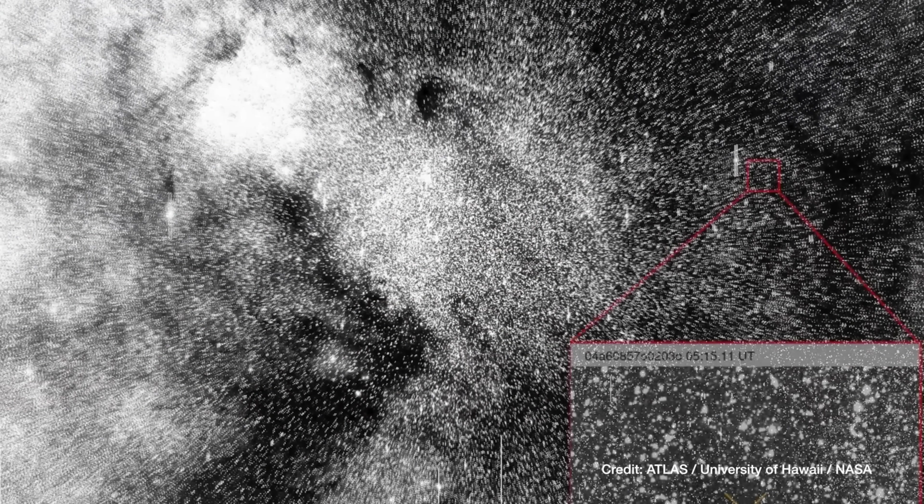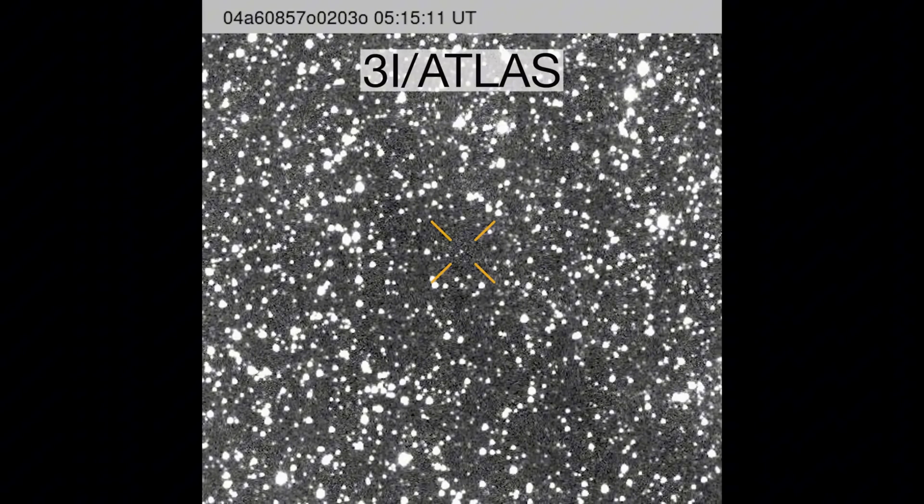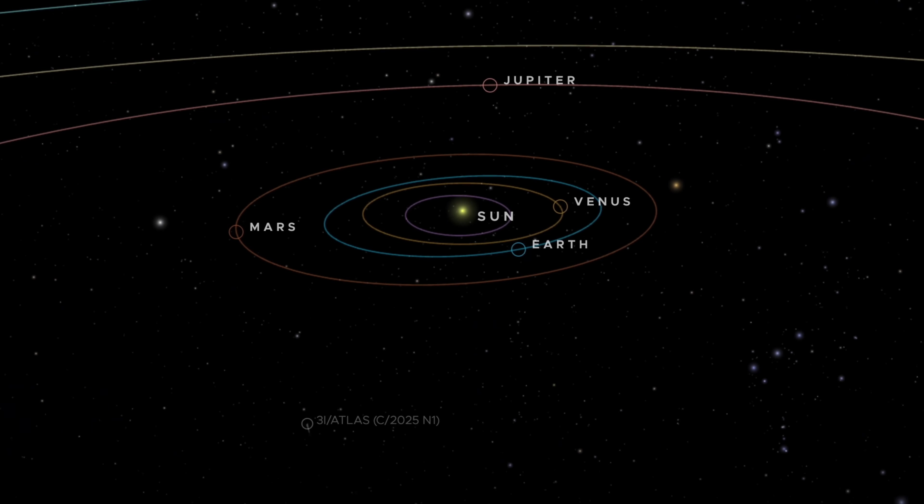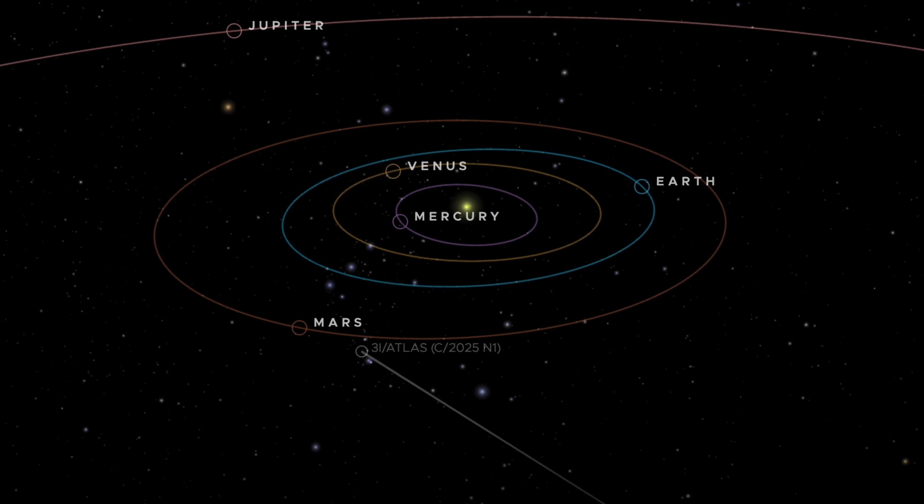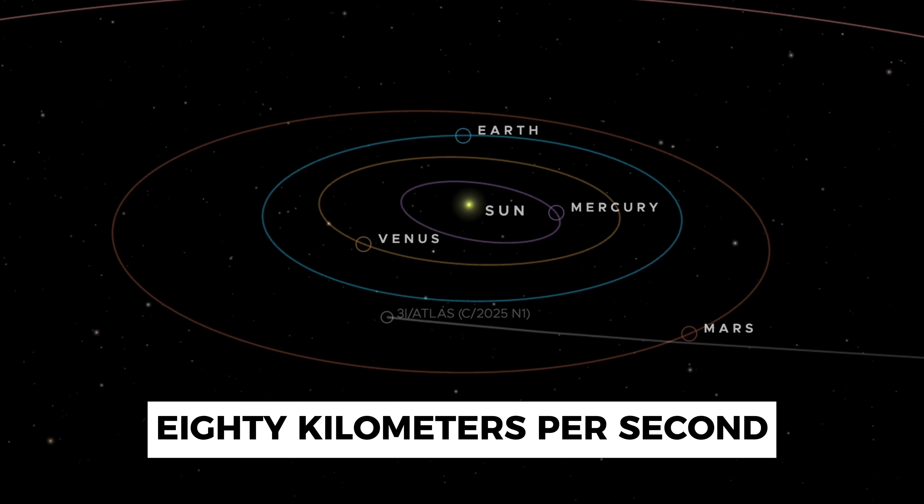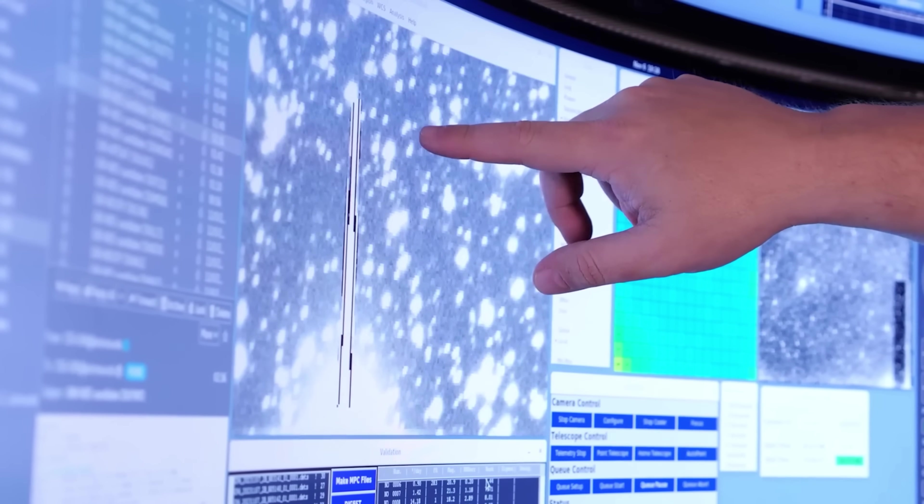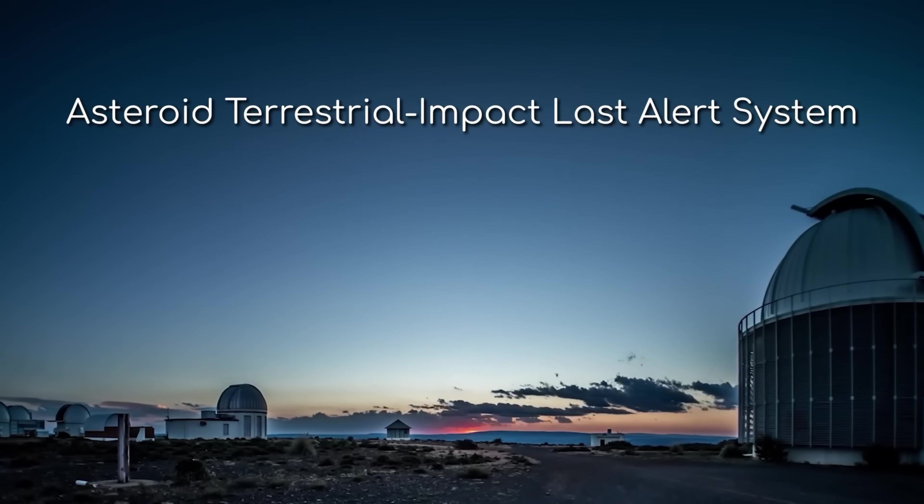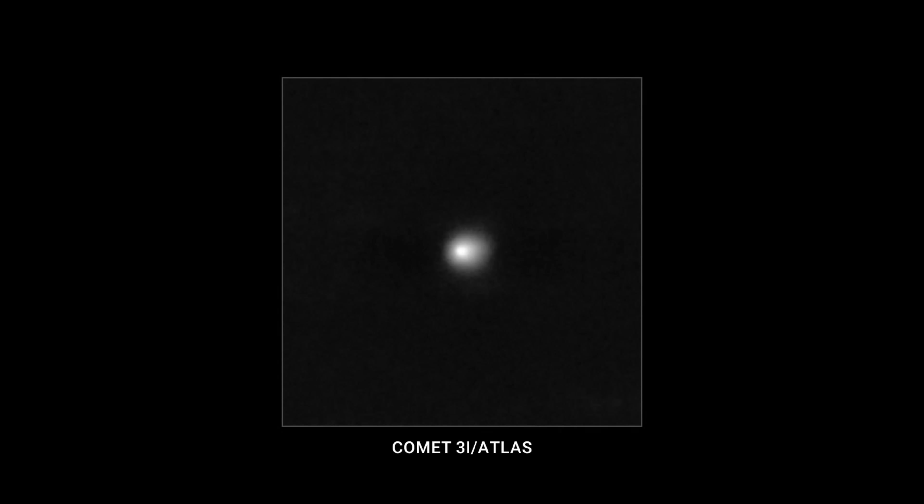To understand the magnitude of this observation, one must first appreciate the unique nature of the target itself. 3I/ATLAS was not merely another rock. It was a hyperbolic intruder, an object that fell into our solar system from the galactic north with a velocity so extreme, exceeding 80 kilometers per second at its peak, that it could not be bound to our sun. Discovered in summer 2025 by the ATLAS Sky Survey, it was immediately identified as a messenger from another star system, only the third such object ever cataloged by human astronomers.